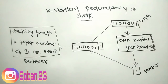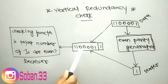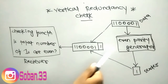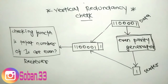But what if the data unit has been damaged in transit? What if instead of 1 1 1 0 0 0 0 1, the receiver sees 1 1 1 0 0 0 0 0 1? When the parity checker counts the ones, it gets five — an odd number. The receiver knows that an error has been introduced into the data somewhere and therefore rejects the whole unit.